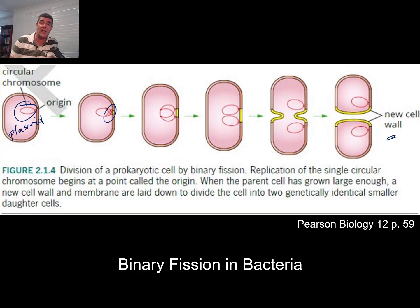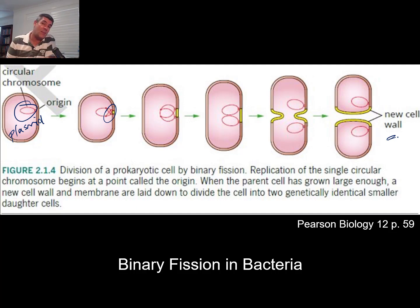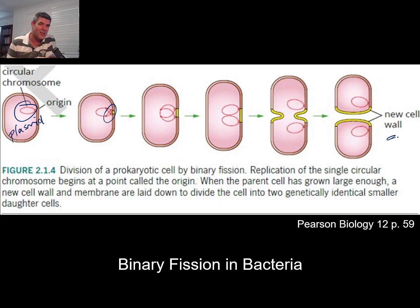So there are a few examples and reasons why bacteria undergo asexual reproduction through binary fission that actually makes them, certainly in population number size, a very successful group.